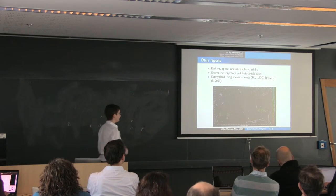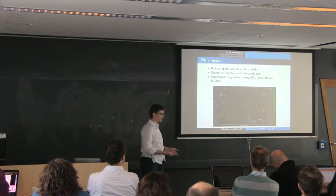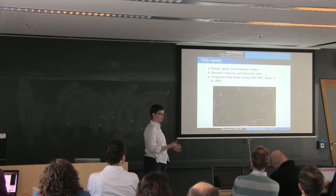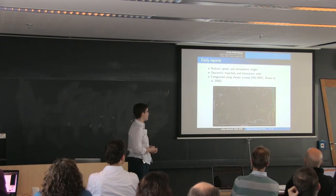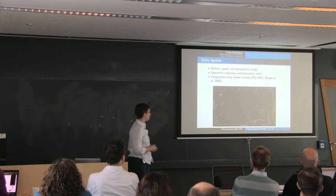So it reports the basic observables, the direction of the meteor, which we call the radiant, velocities, atmospheric heights, stuff like that. Asgard also produces the derived quantities like the orbit.